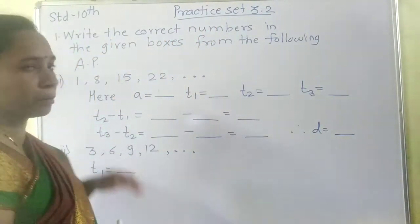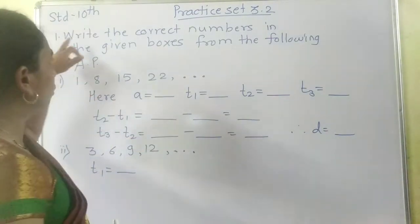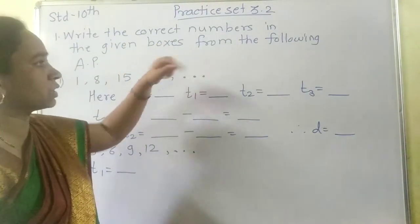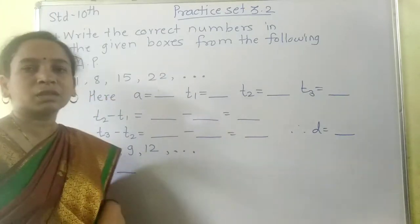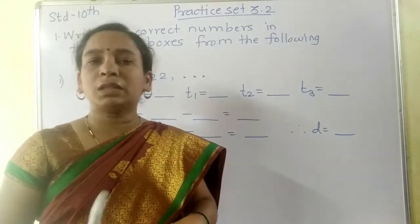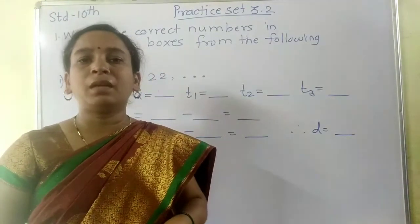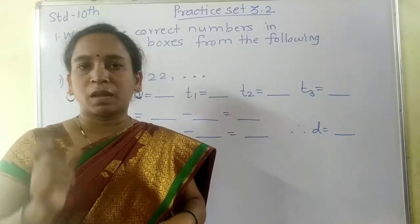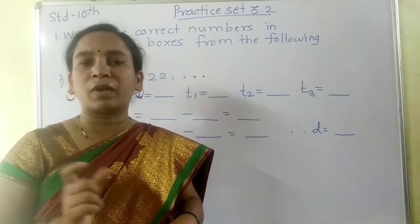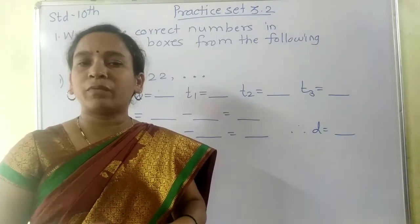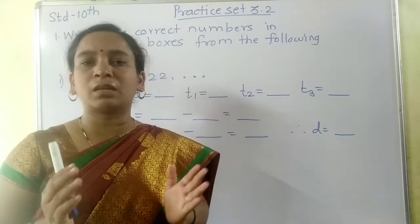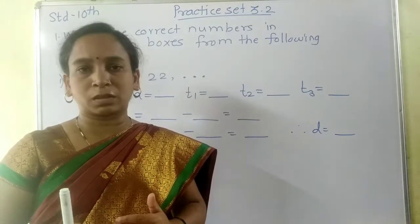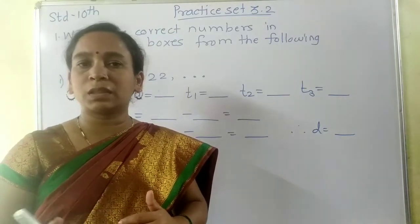Let's study the first example given on the board: write the correct numbers in the given boxes from the following AP. This given sequence is in AP. The definition of AP is: if you take any two consecutive numbers — any two closest numbers — and find the difference among them, you will find that throughout the sequence the difference between any two consecutive numbers is constant. Then that given sequence is in AP.